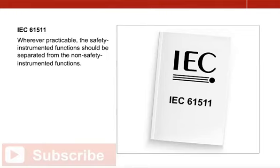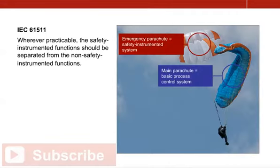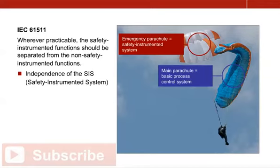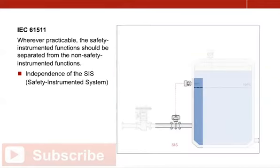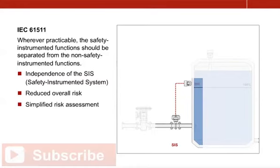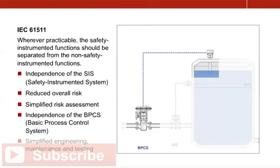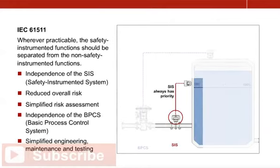A fundamental requirement placed on a safety instrumented system according to IEC 61511 is that safety functions be separated from the functions in the plant that are not relevant to safety wherever possible. This simplifies the instrumentation architecture, the overall risk, as well as the risk assessment. It also makes engineering, maintenance and testing of the basic process control system, which is used for normal control operation, much easier. If the function cannot be separated, it must be ensured that the safety instrumented system always has priority over the basic process control system.